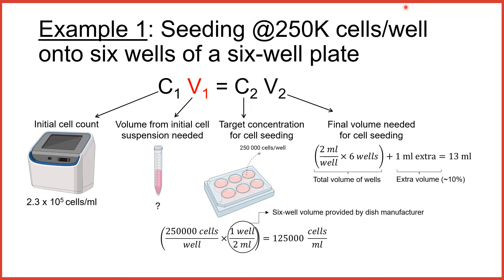Although we know that the cells are to be seeded at 250,000 cells per well, this unit does not match the units of cells per milliliter as in C1. To calculate C2, we need to know the volume of a well in a 6-well plate. This information is provided by the dish manufacturer, and in our case is 2 milliliters per well. From a simple multiplication of the number of cells per well with the well volume, we can calculate the concentration C2 in cells per milliliter.